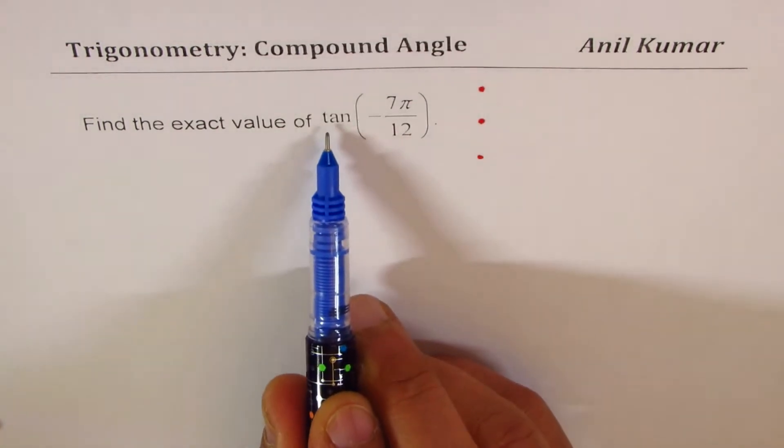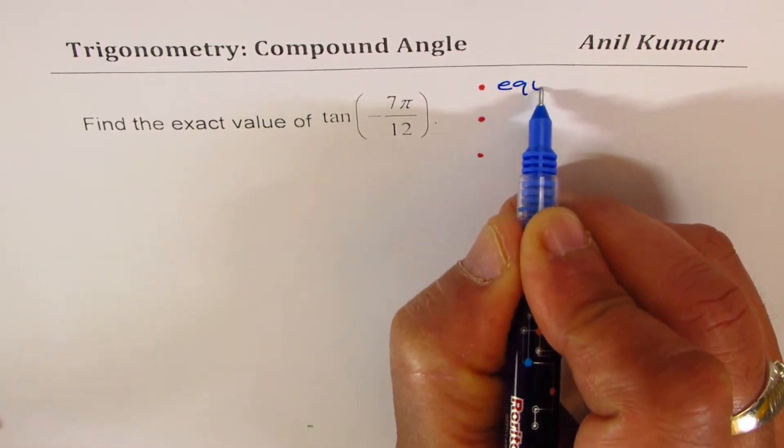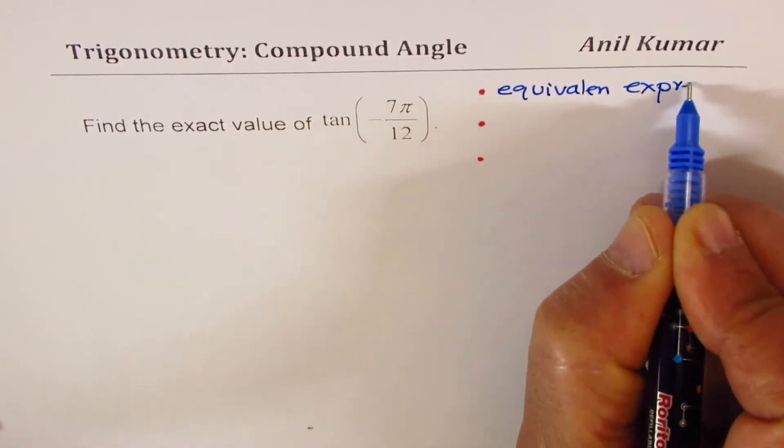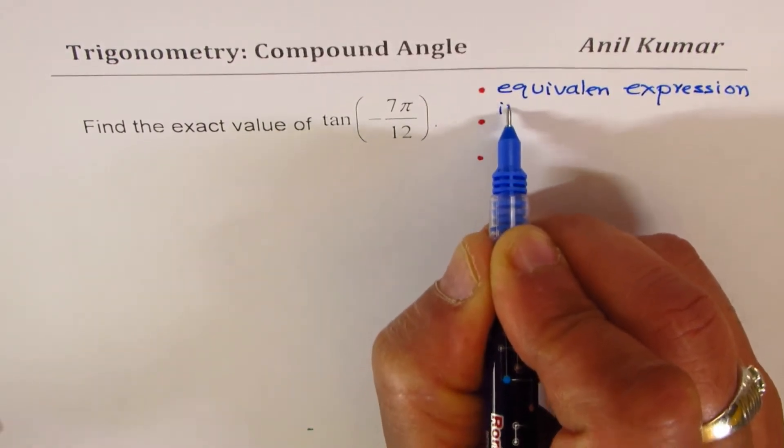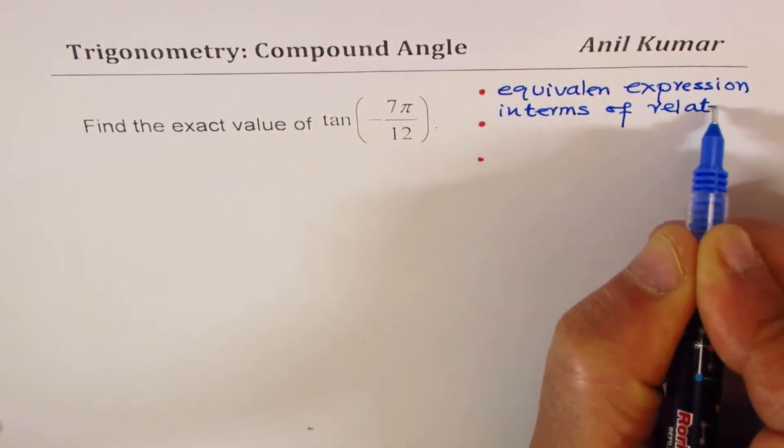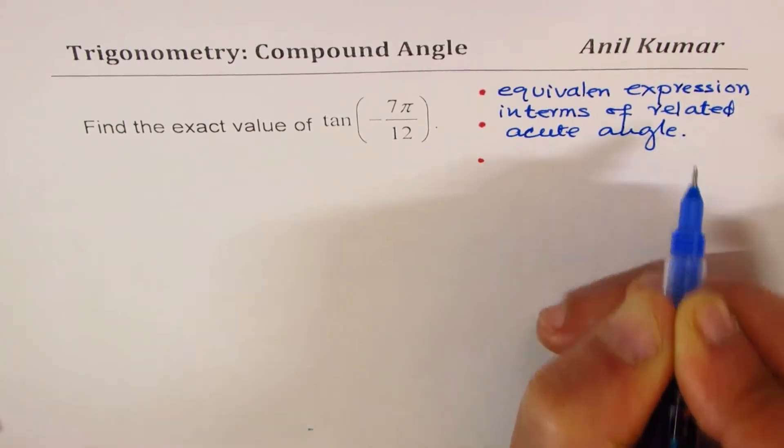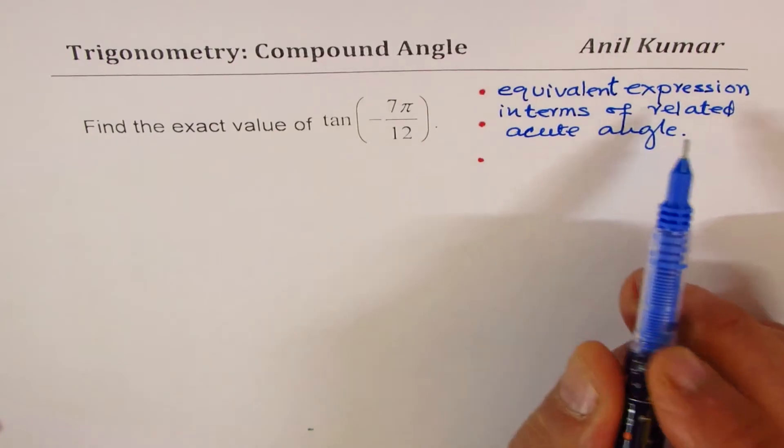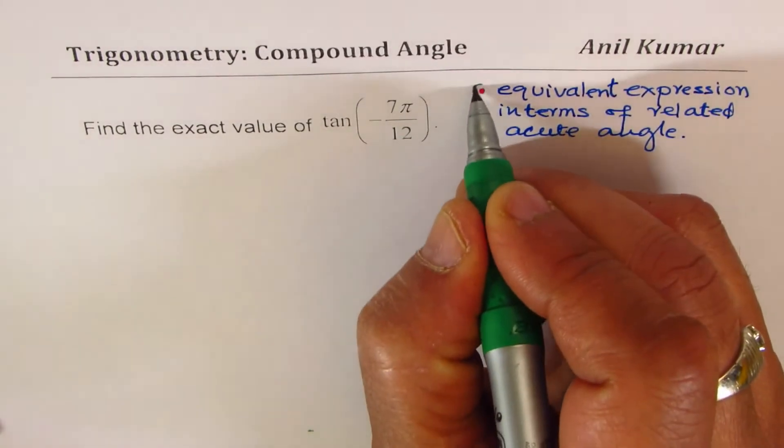First thing is, whenever you get an angle or an expression, we need to find equivalent expression in terms of a related acute angle. That should be the first thing. The second thing is how to split it as sum or difference.